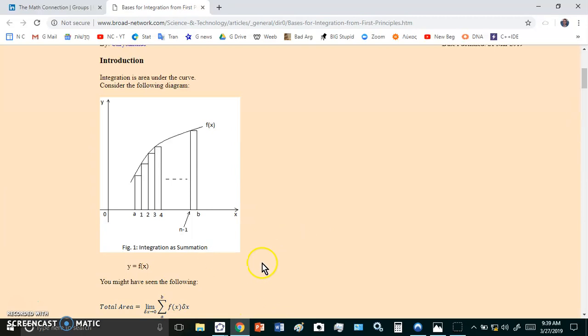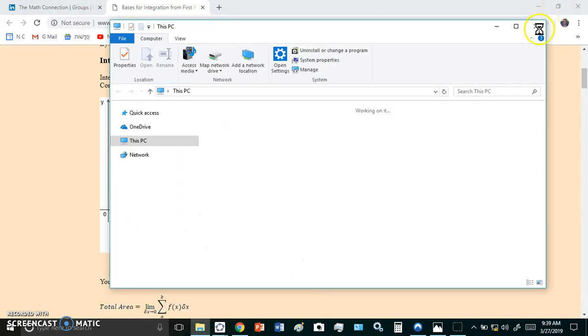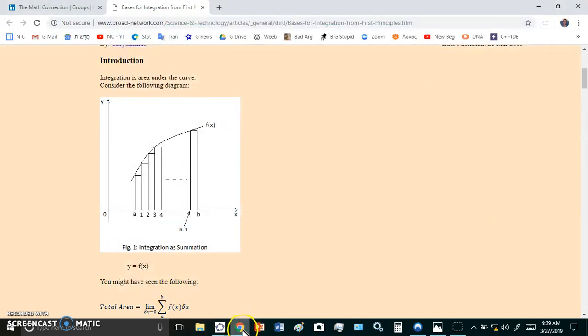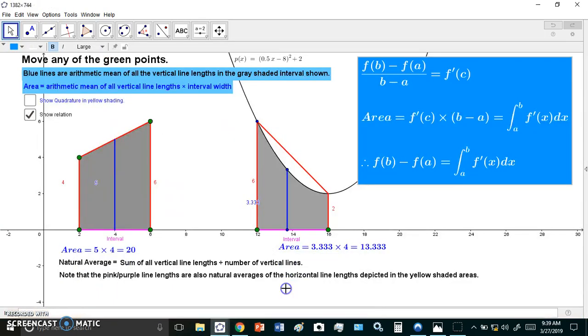Now, an arithmetic mean is a second most important concept. And it basically tells us, if you're looking at this diagram here, what these vertical lines, all the vertical lines in this interval would be if we redistributed each line so that they are all equal. In other words, let me show you something, something like this.